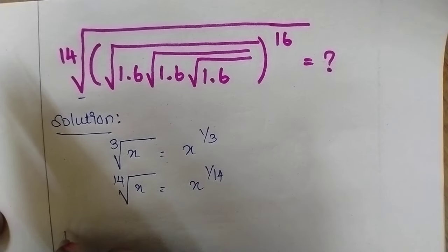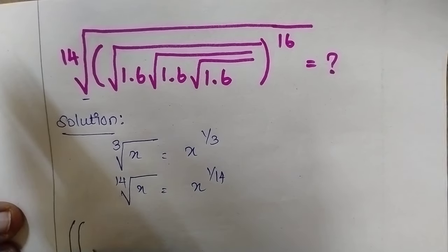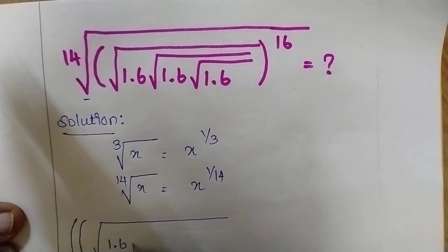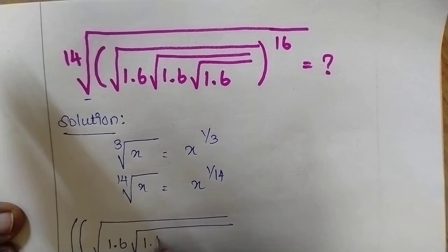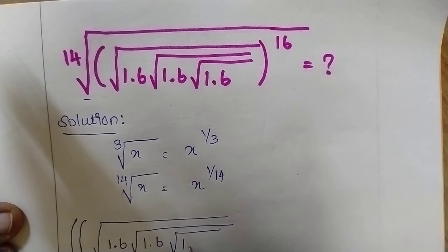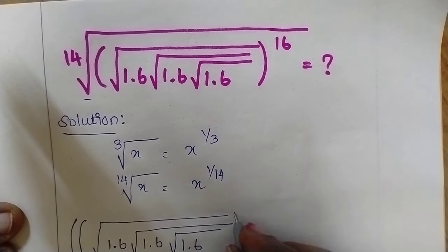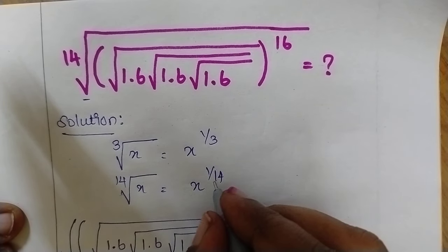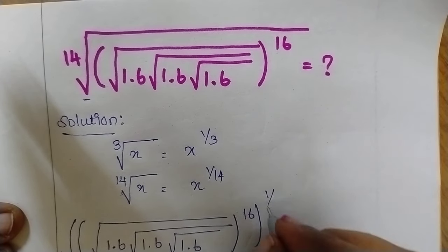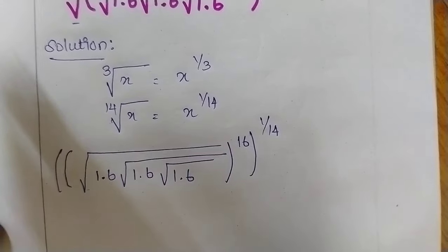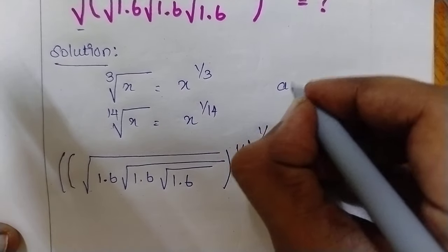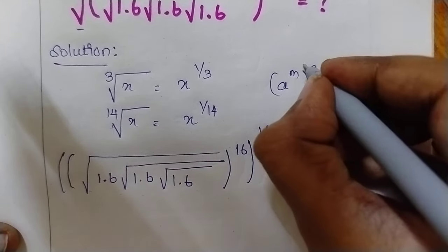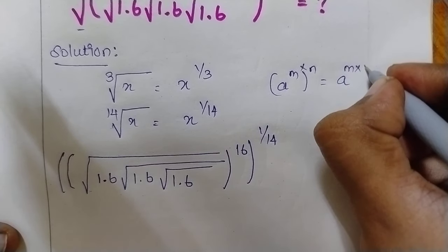Therefore, this becomes: the square root of 1.6, the root of 1.6, the root of 1.6, to the power of 16 — and that to the power of 1 by 14. So if we see here, this is in the format of k power m, the whole power n.